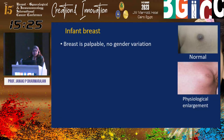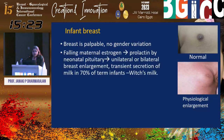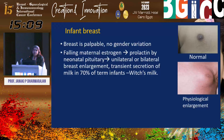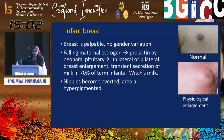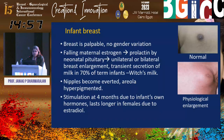The infant breast is palpable with no gender variation. Because of falling maternal estrogen, there is prolactin secretion by the neonatal pituitary. Unilateral or bilateral breast enlargement can occur, and there can be transient secretion of milk in 70% of term infants, termed witch's milk. Any infant born preterm will not have milk secretion. Nipples become everted, the areola becomes hyperpigmented, and stimulation at four months occurs due to the infant's own hormones, lasting longer in females due to estradiol.